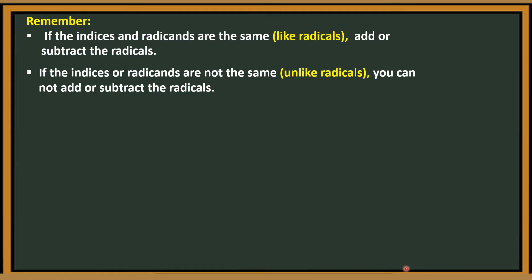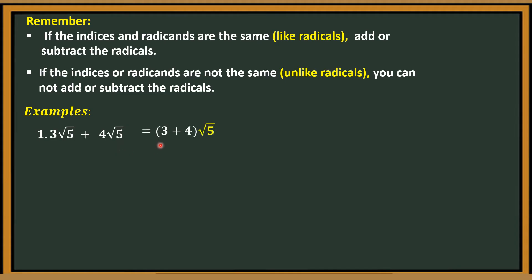Let's have an example. Number 1: 3 square root of 5 plus 4 square root of 5. They have the same index — both are 2 — and the same radicand. Therefore, this is like radicals and we can add them. So, just add 3 plus 4 and copy the radical: square root of 5. That gives us 7 square root of 5.